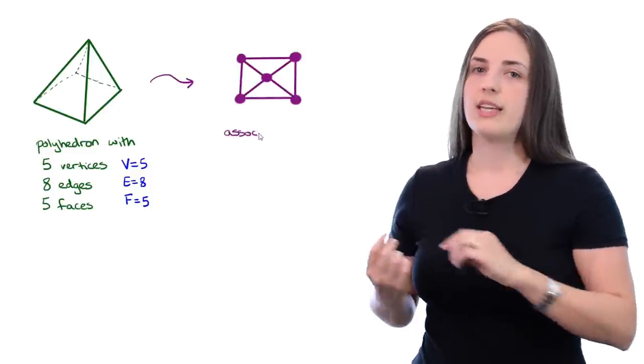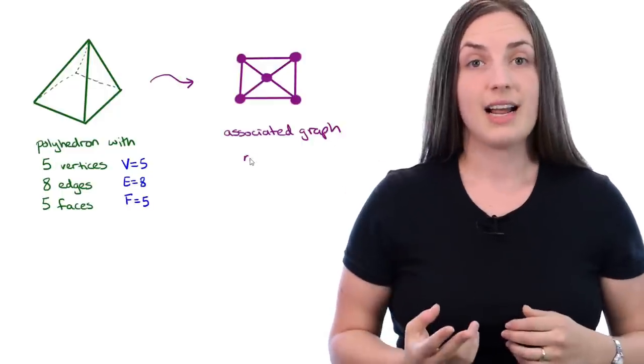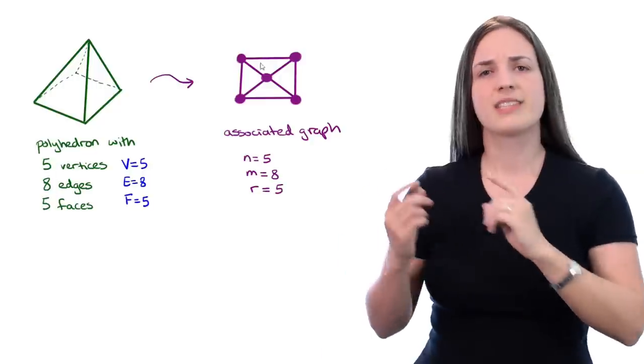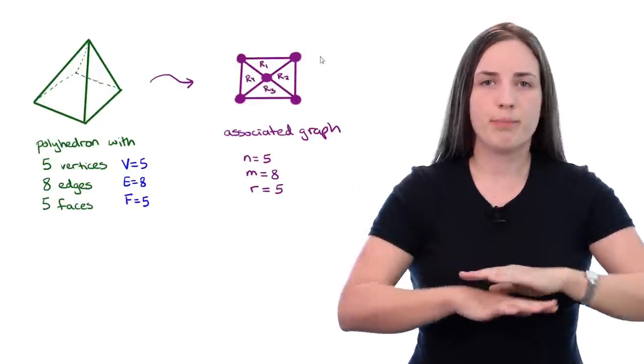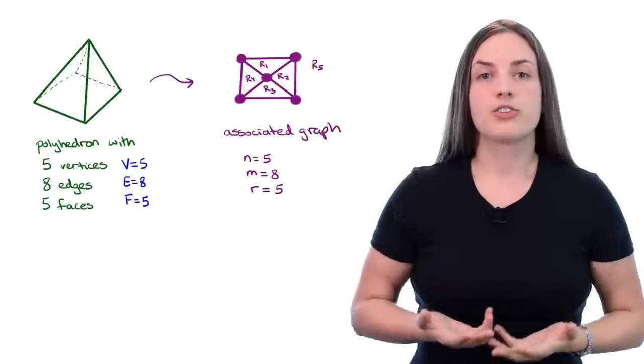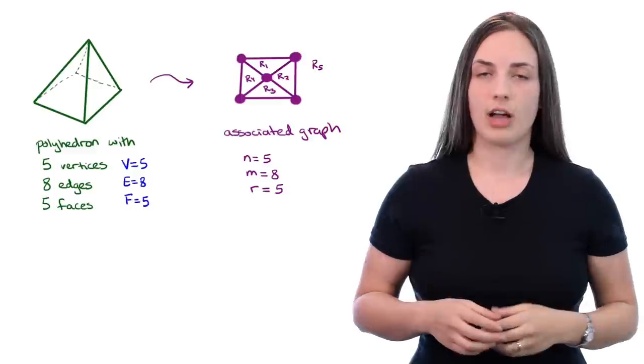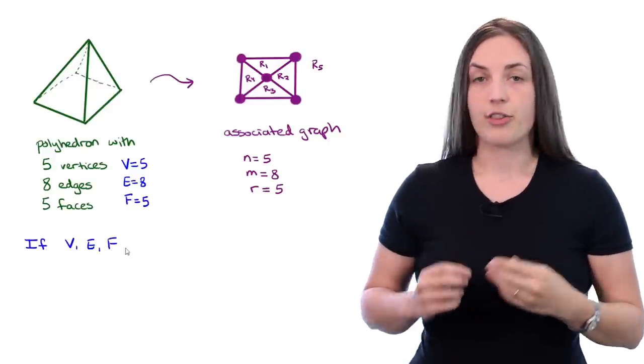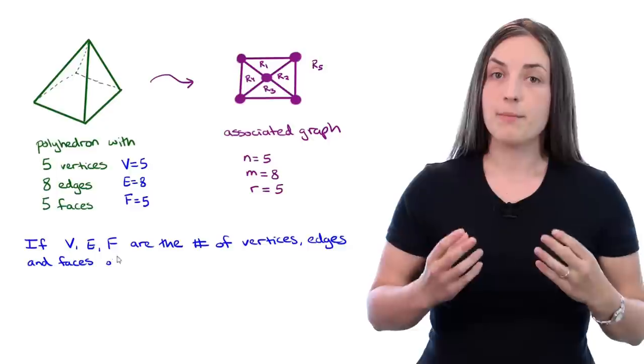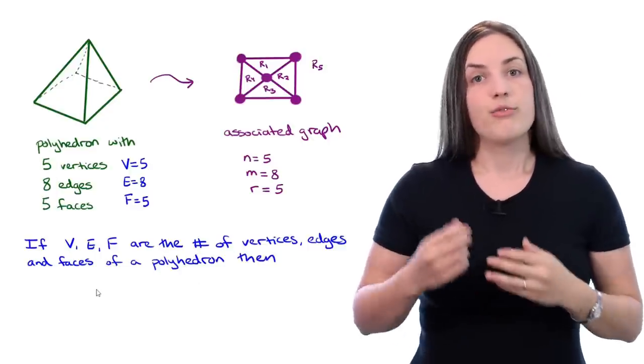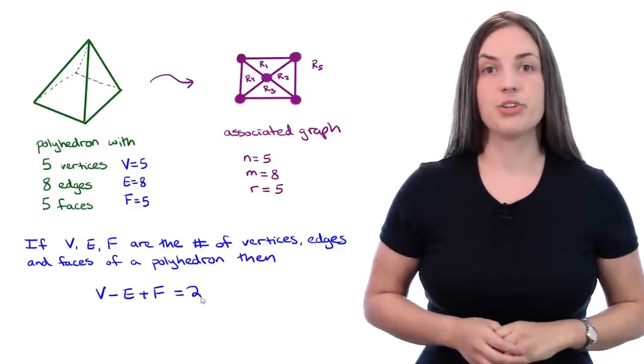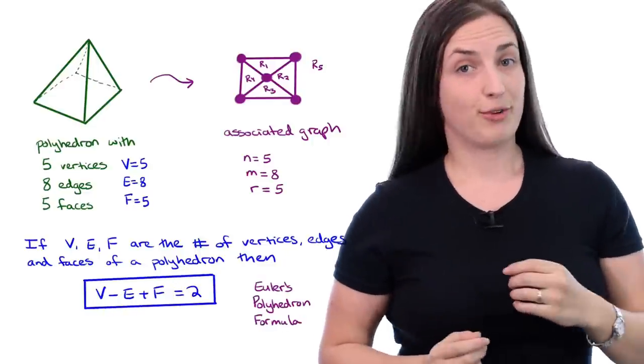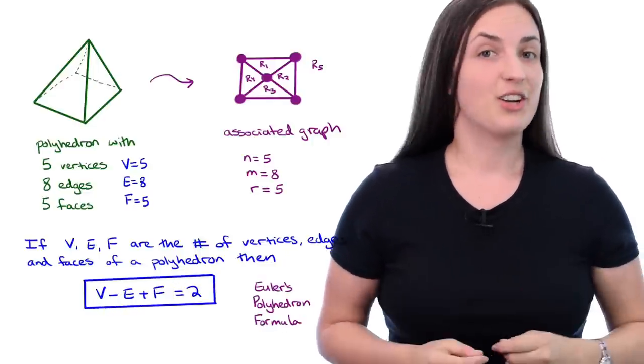We can also draw a graph which looks like a bird's eye view of this tetrahedron. Notice that it has five vertices, eight edges, and five regions. In general, if V, E, and F are the number of vertices, edges, and faces in a polyhedron, then V minus E plus F is equal to two. This is known as Euler's polyhedron formula.